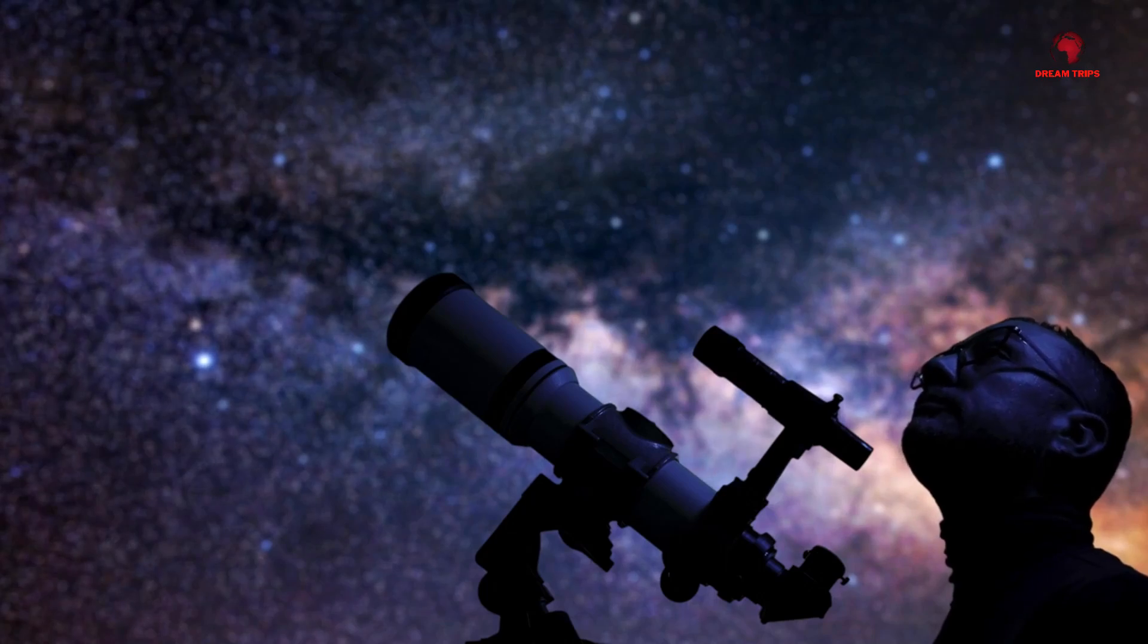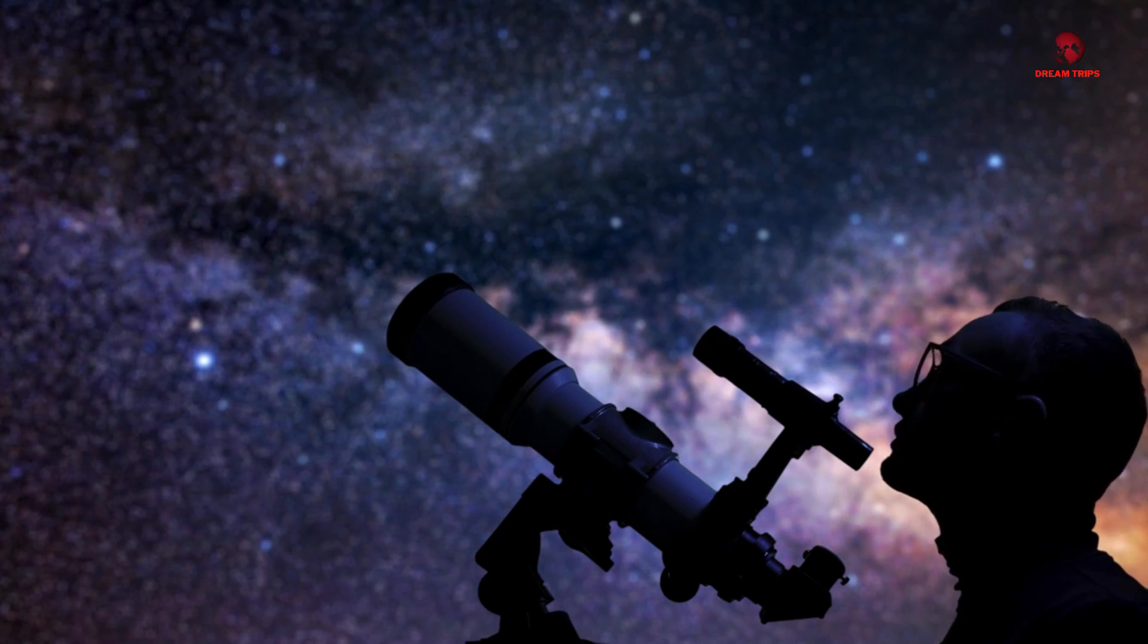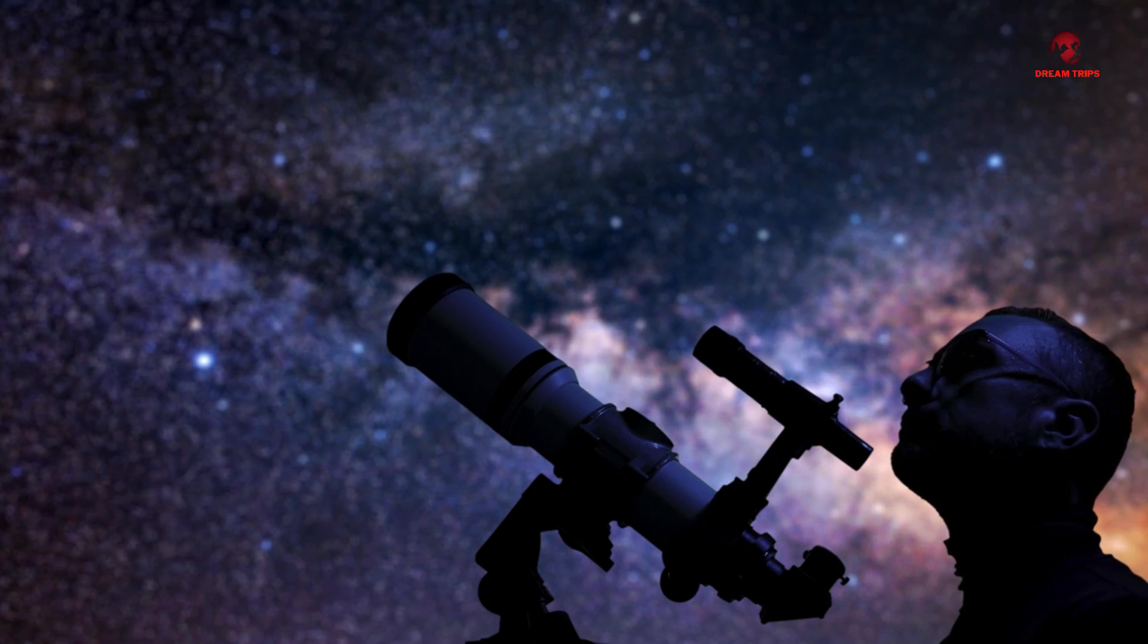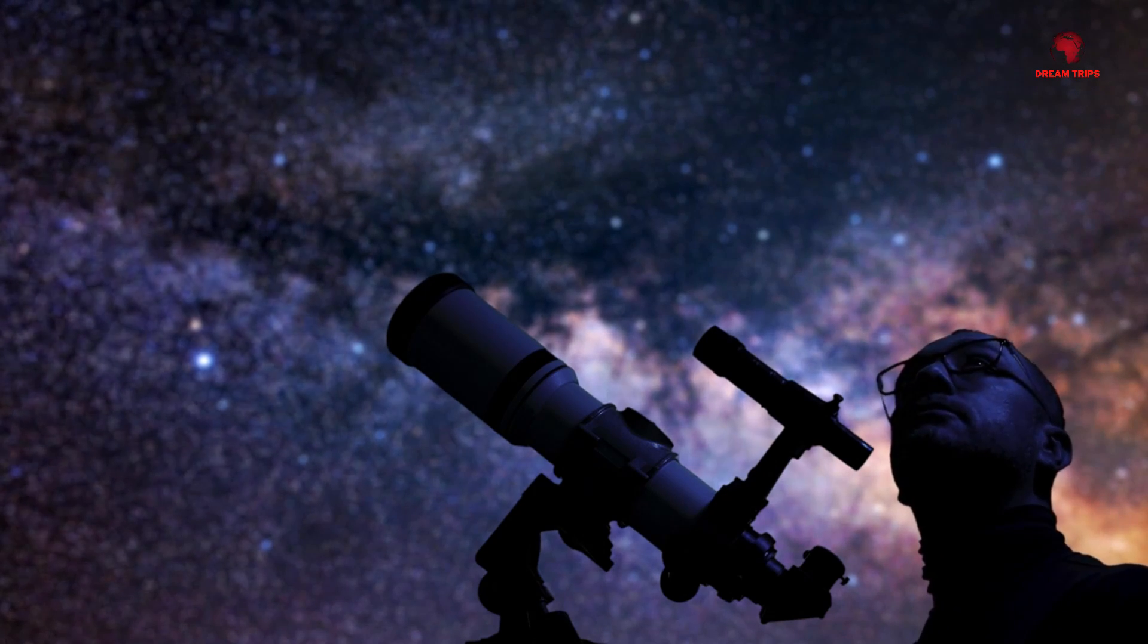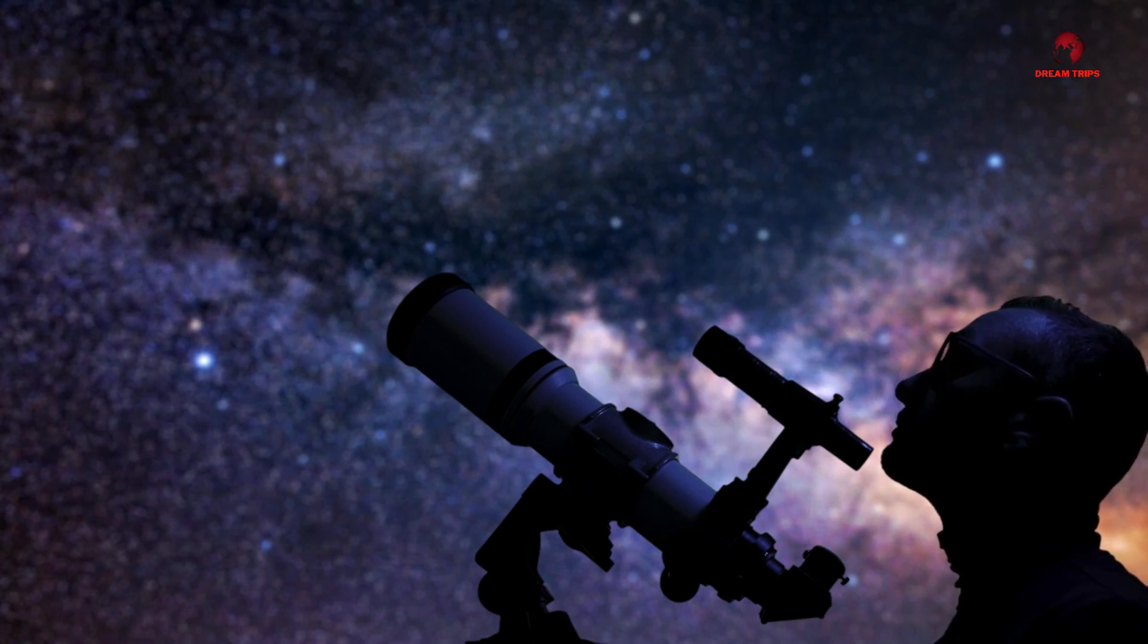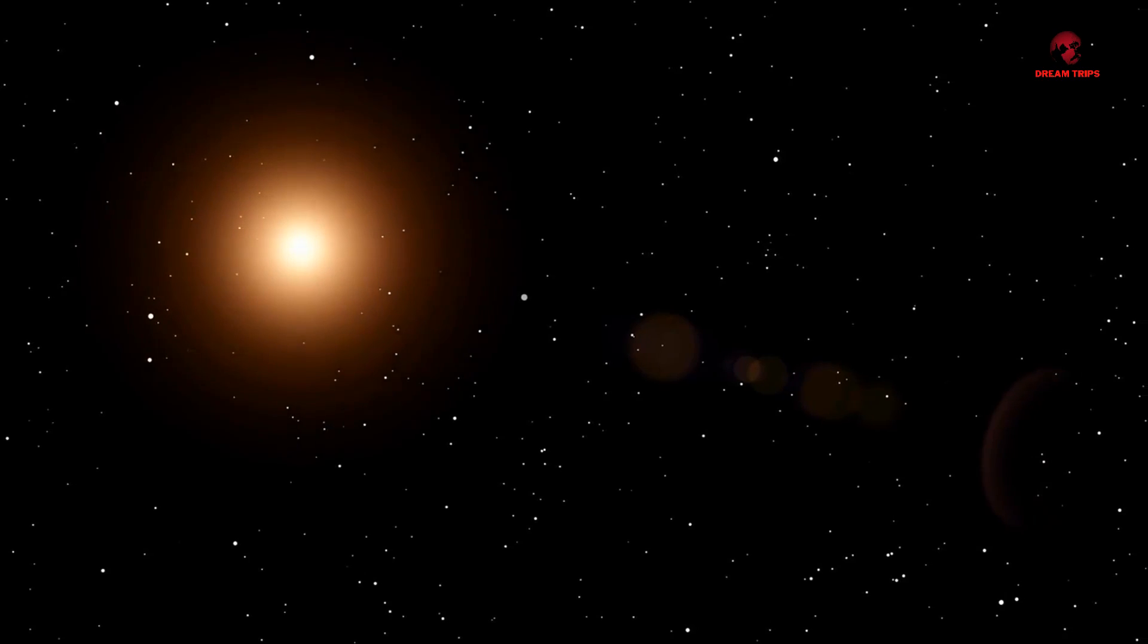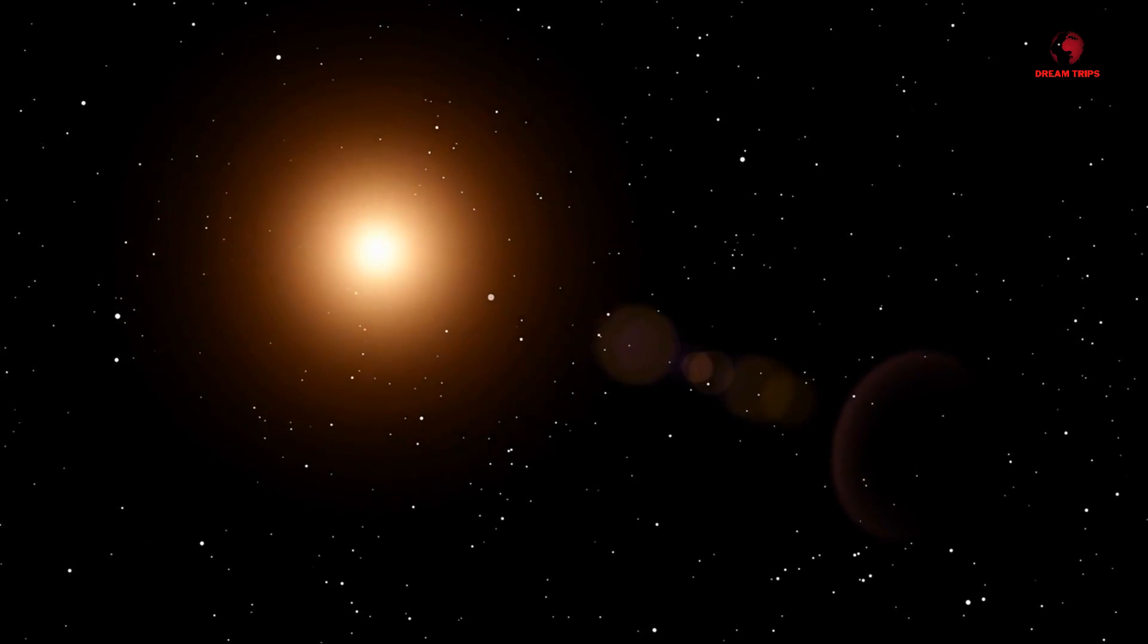In our comparative analysis, let's delve into the specifics. Starting with size, UY Scuti's diameter is about 1,700 times that of the sun. When it comes to volume, the comparison becomes even more staggering. If the sun were a single basketball, UY Scuti could engulf enough basketballs to fill an entire sports arena. In terms of brightness, despite its cooler surface temperature, UY Scuti's immense size allows it to outshine our sun substantially. However, it's worth noting that this brightness is spread across its vast surface area, making it less intense per square meter than the surface of the sun.